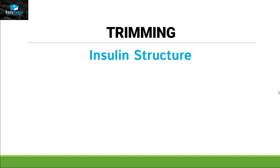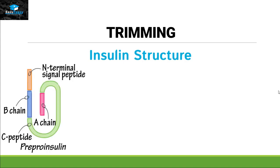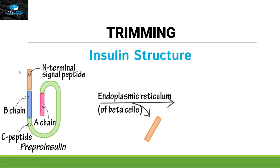Let's take a real-life example — insulin structure. When insulin is formed by the process of translation it is called pre-pro-insulin. As you can see in this picture, the pink portion is the A chain, the green portion is the C-peptide chain, the blue portion is the B chain, and the orange portion is the N-terminal signal peptide. This N-terminal signal peptide takes this protein into the endoplasmic reticulum. Once the location is decided, the N-terminal signal peptide is removed from it.